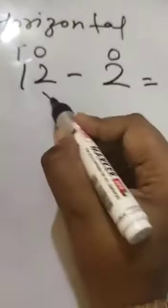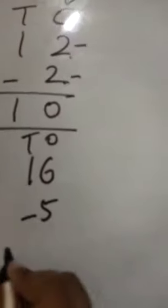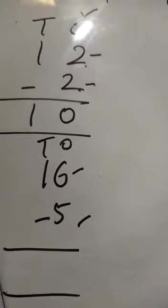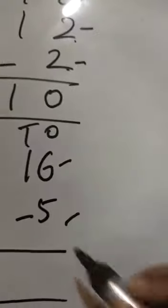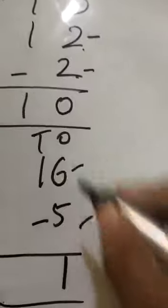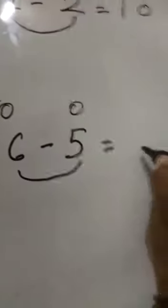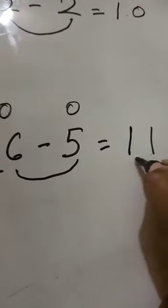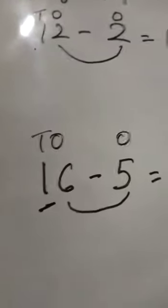And next question 16 minus 5 and horizontally 16 minus 5. Ones value we have 6 and 5. Then answer will be 1 and tens value we have 1. And horizontally also tens ones. Ones value 6 minus 5 is equal to 1 and tens we have 1 value then answer 11. Answer will be 11 students. You have to do this and you have to complete 91 and 92 pages. If you have any problem you can ask. Thank you so much.